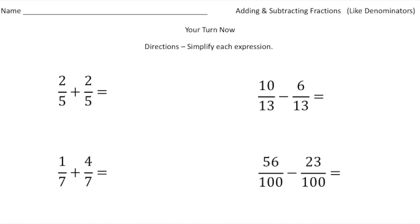Welcome back. Let's see how you did with these practice problems. The first fraction was two fifths, and we're adding another two fifths to that fraction. Because we have the same denominator, we can add the numerators. Two plus two is four, so it's going to be four fifths.